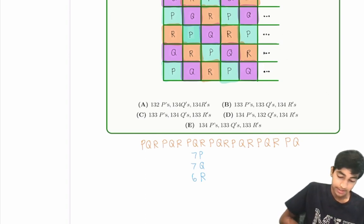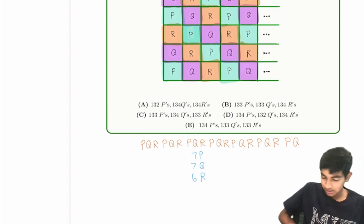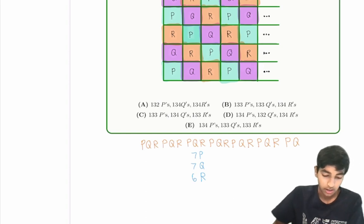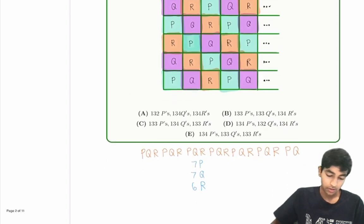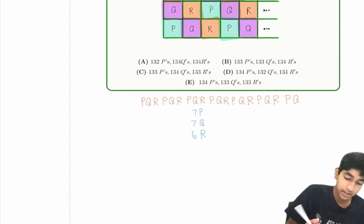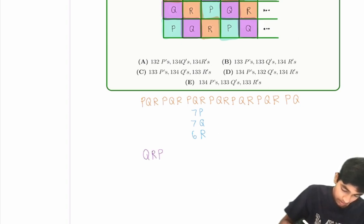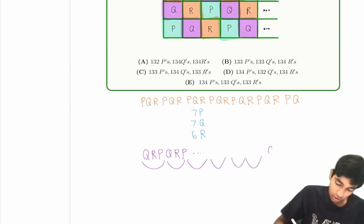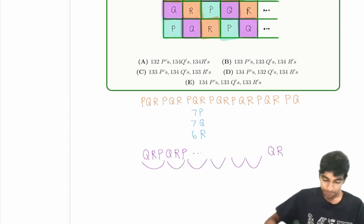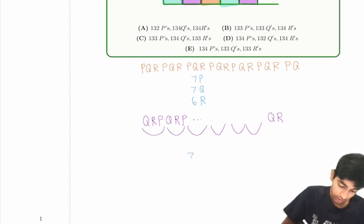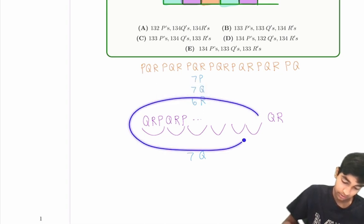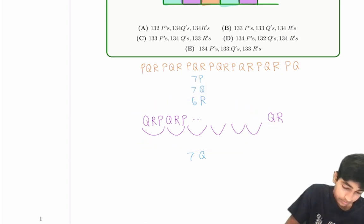Now let's look at the second column. The second column is similar, except it starts Q, R, P instead of P, Q, R. Using the same logic, there will be six groups of Q, R, P, and then Q, R at the end — a total of 20. So there are seven Q's, seven R's, but only six P's.